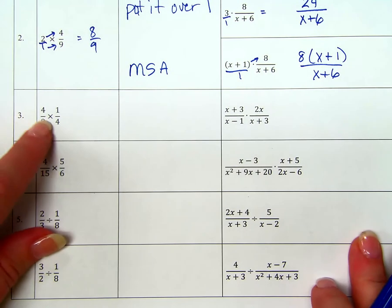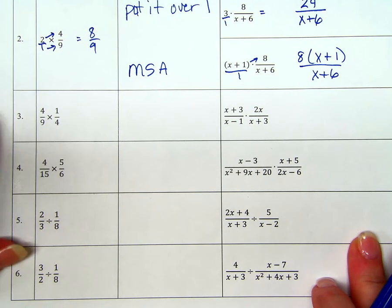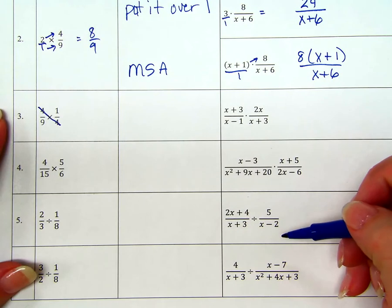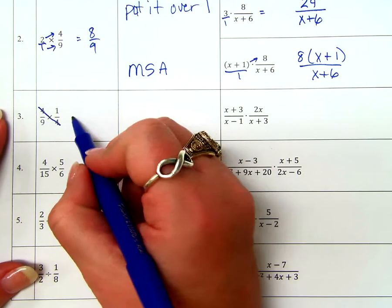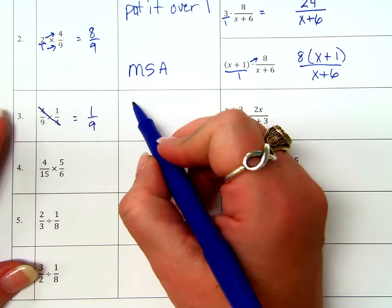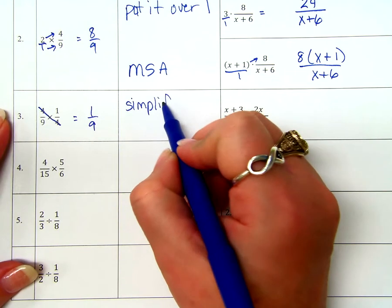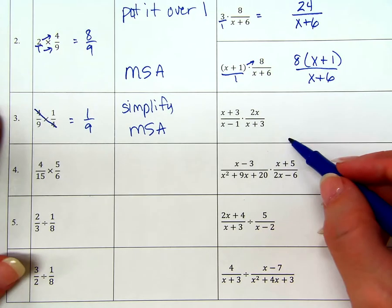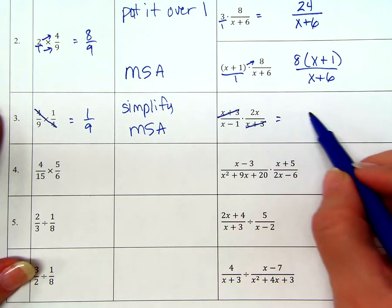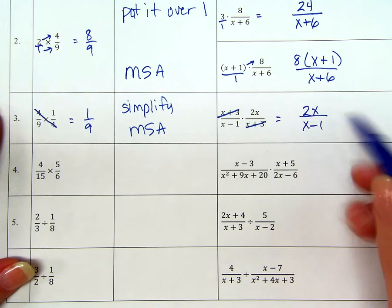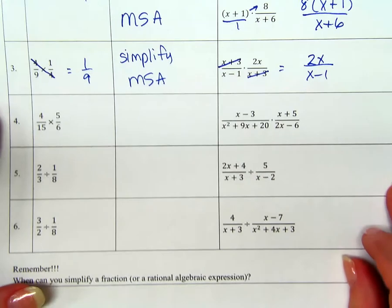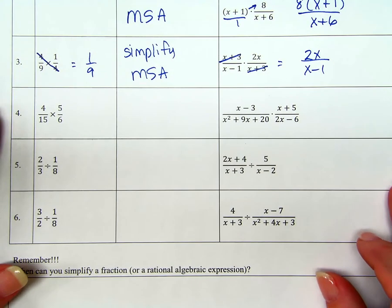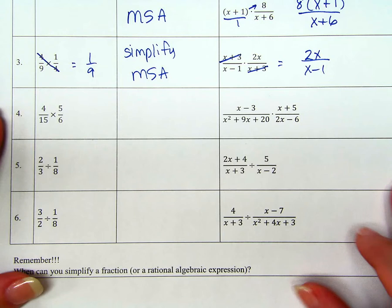Put it over 1. You going to know what that means later? Good. Okay. I'll let you say it then. That's fine. So here. Put this over 1. Multiply straight across. 24 over X plus 6. Really? That's it? Yep. Put this over 1. Multiply straight across. 8 times X plus 1 over X plus 6. Really? That's it?